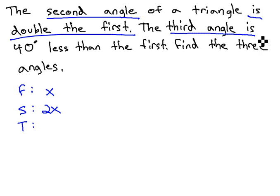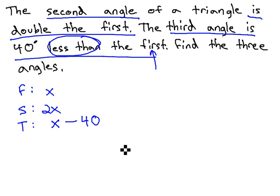Then, we're told that the third angle is 40 less than the first. Recall that less than means we're subtracting, and the 40 must come at the end because subtraction is built backwards. We're subtracting 40 from the first. The first angle is just x.